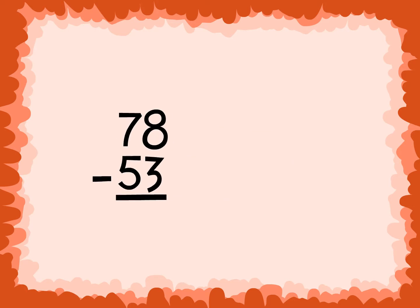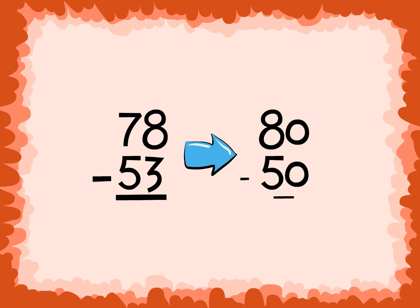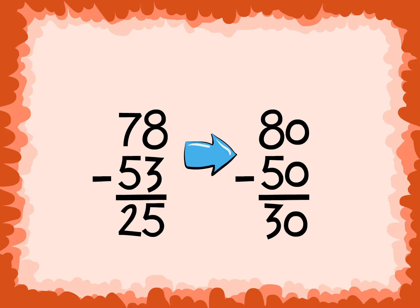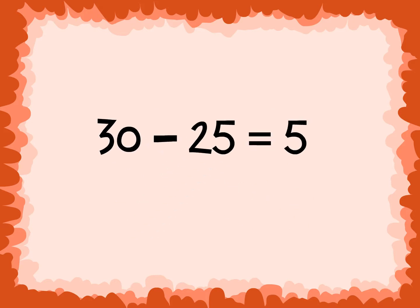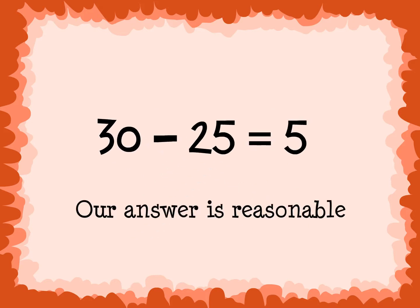78 minus 53: find the closest 10. 78 is closest to 80, and 53 is closest to 50. Estimate the difference: the estimate is 30, because 80 minus 50 is 30. The exact answer is 25, because 78 minus 53 is 25. Since our exact answer is 5 less than the estimate, our answer is reasonable.